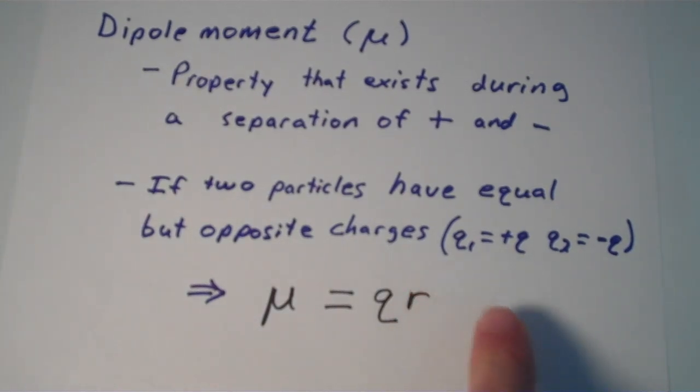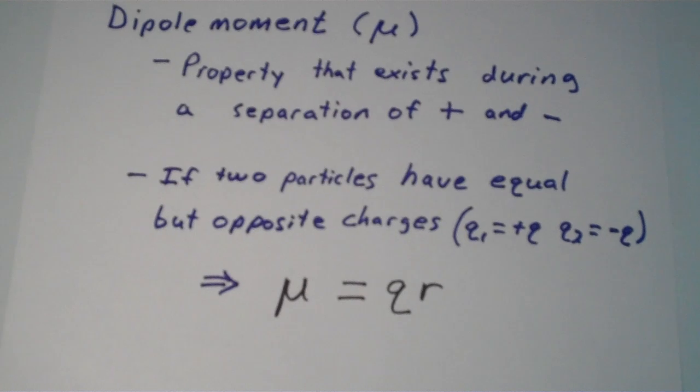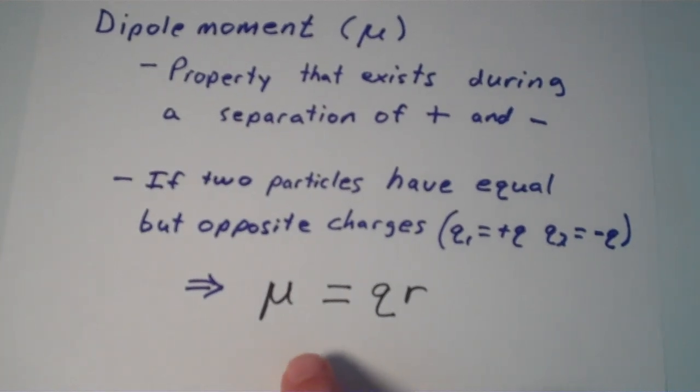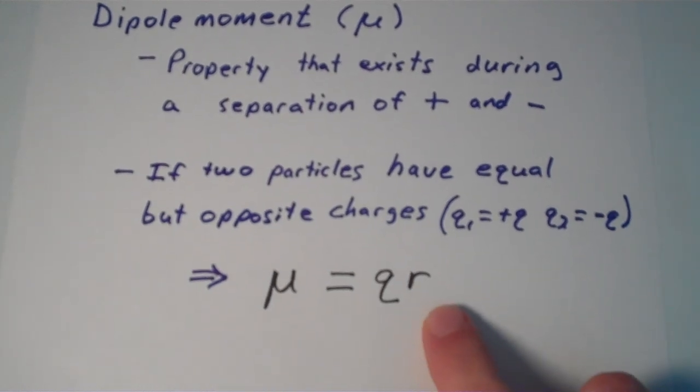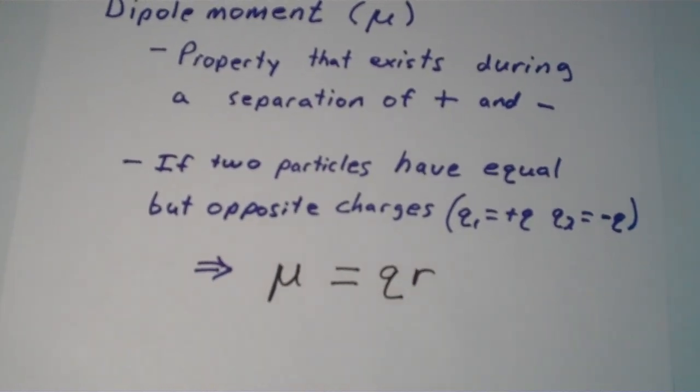In other words, q1 equals positive q and q2 equals negative q. If this is the case, then the dipole moment mu is going to be given by qr, where r is the distance between the two particles.